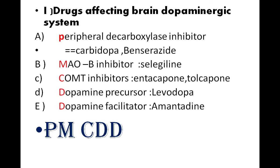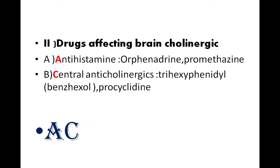C stands for COMT inhibitors — examples are entacapone and tolcapone. Then D stands for dopamine precursor — example is levodopa — followed by dopamine facilitator — example is amantadine. So remember: P-M-C-D, 'Prime Minister's CD'.